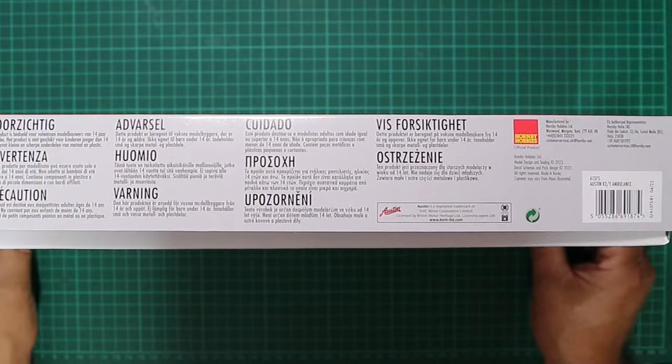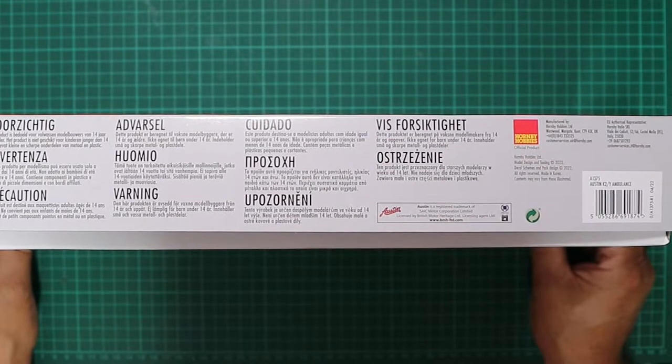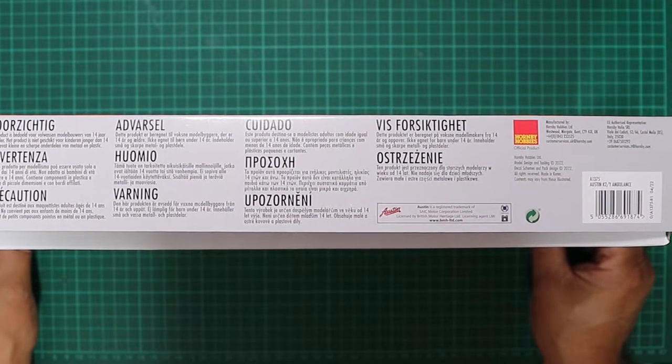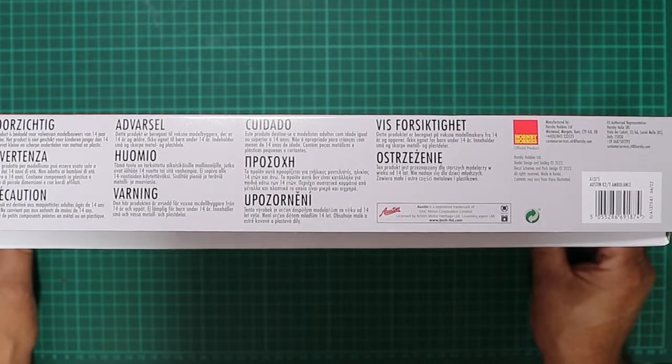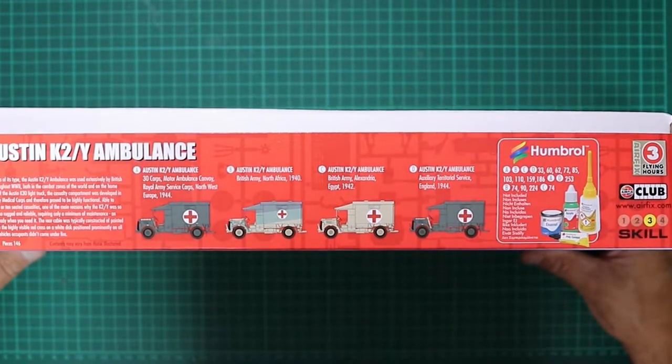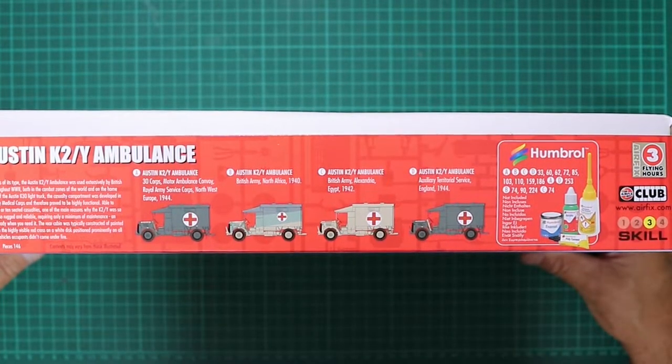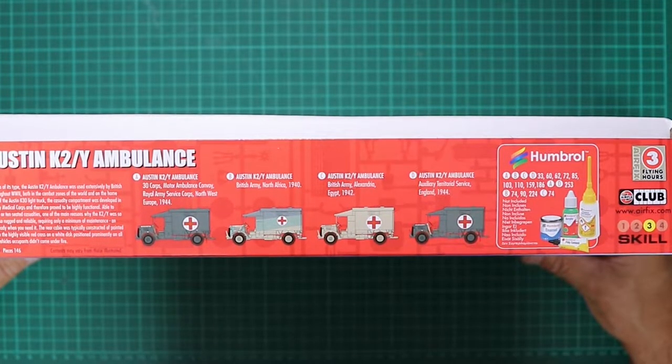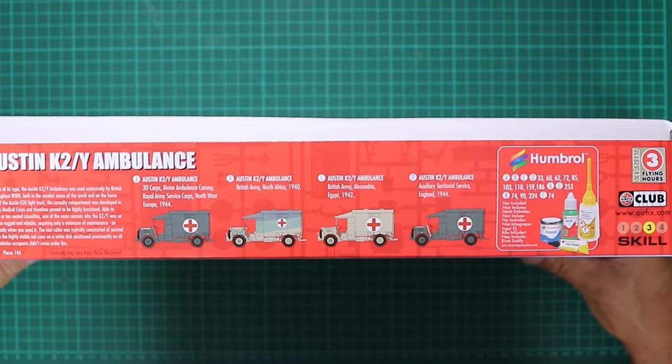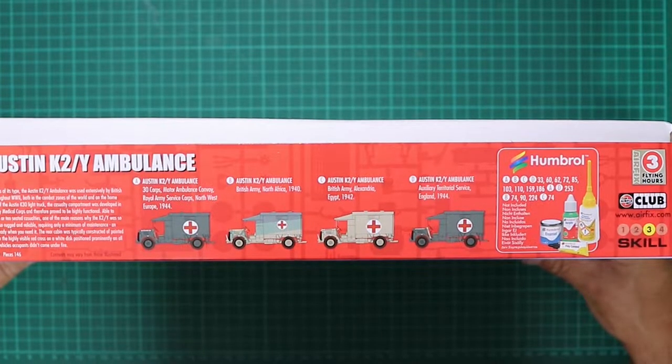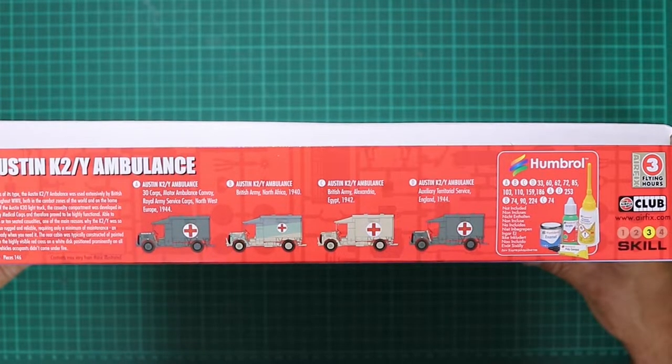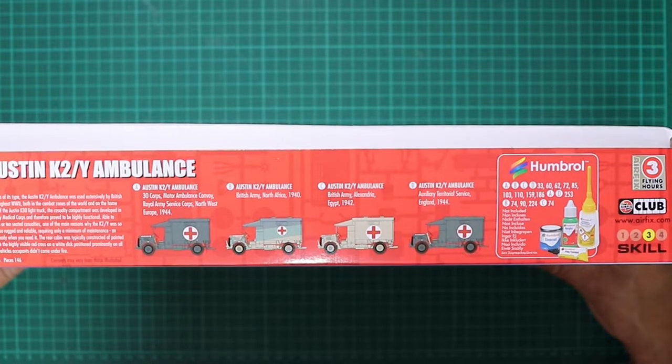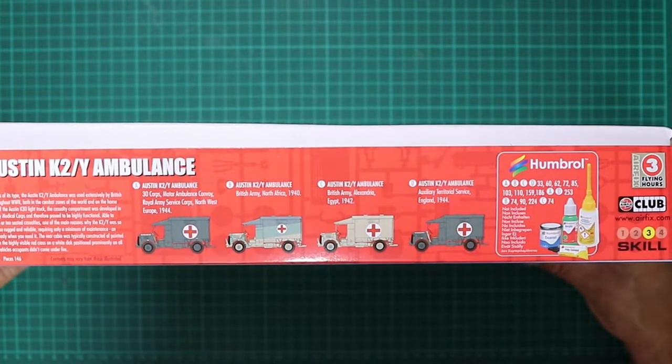Doing the box top, on one side we've got the Austin trademark and numerous multilingual explanations, and on the other side we have the four options that are included in the kit and a brief blurb about what the ambulance was all about and its operational history. Your kit number for this one is A1375, so let's lift the lid and see what we get in the box.